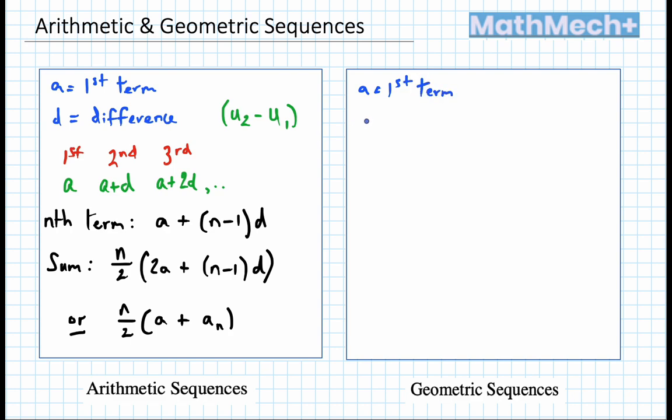Instead of d, we have r, which is known as a common ratio. So arithmetic is between adding and subtracting, just to keep it simple. And with geometric, you would be like multiplying, dividing. So the ratio, the difference between them.